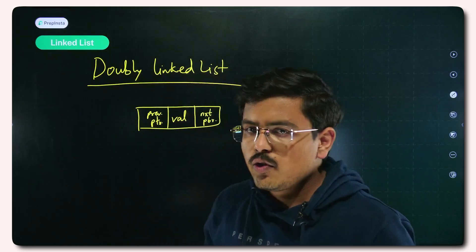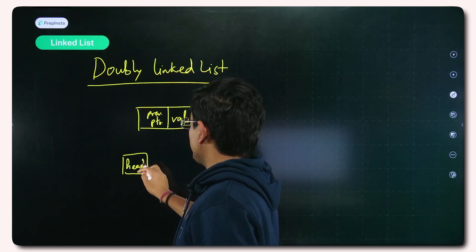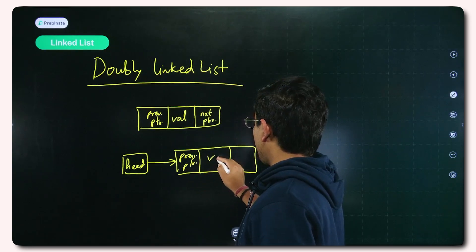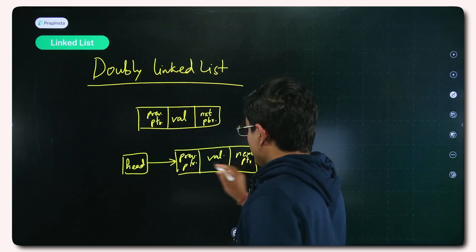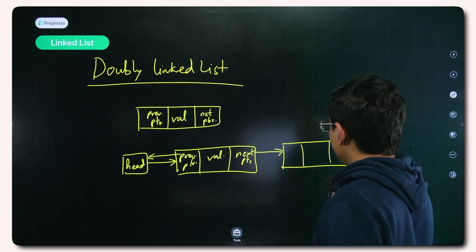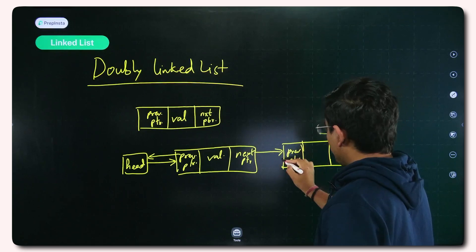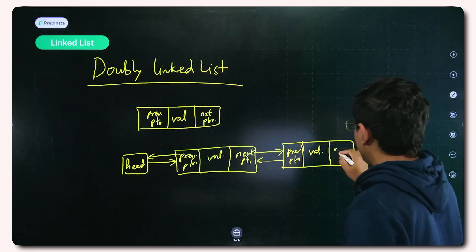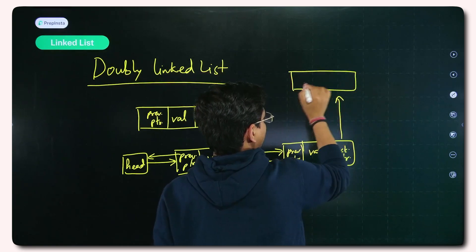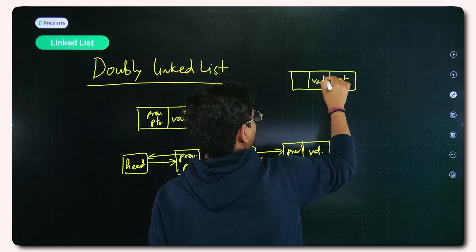When working with a doubly linked list, you initially have a head pointer pointing to a linked list node. That node has a previous pointer, a value, and a next pointer. The previous pointer contains a pointer back toward the head, and the next pointer points to the next node. In the next node, you again have a previous pointer pointing back to the prior node, a value, and a next pointer pointing further ahead.